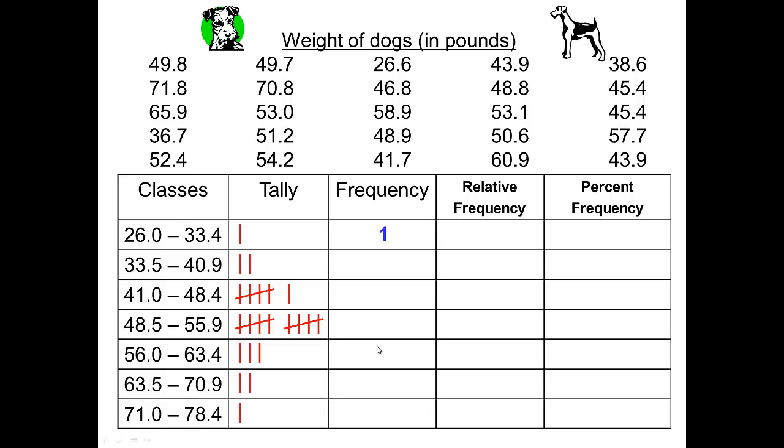Of the data, there is one of those data that falls between 26 and 33.4, two that fall between 33.5 and 40.9, six in the next class, ten in the following, then three, then two, and finally one. And we've got our frequency done.